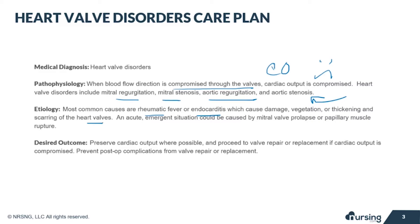An acute emergency situation could be caused by mitral valve prolapse or papillary muscle rupture. The desired outcome in these patients is to preserve cardiac output when possible, proceed to valve repair or replacement, and prevent any complications.